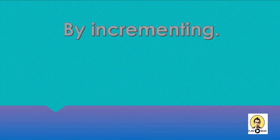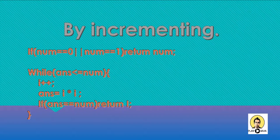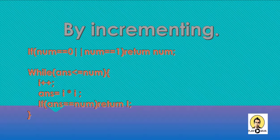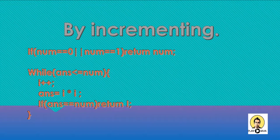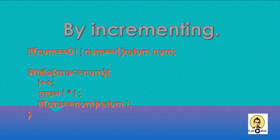For the second method, you will use incrementing each number by one at a time, and then you can find the square root of a number. The code you will write first checks whether the number is 0 or 1. If it comes out to be 0 or 1, then obviously return that number only, because the square root of 0 and 1 are those same numbers respectively. If the number is not 0 or 1, then you will apply a while loop.